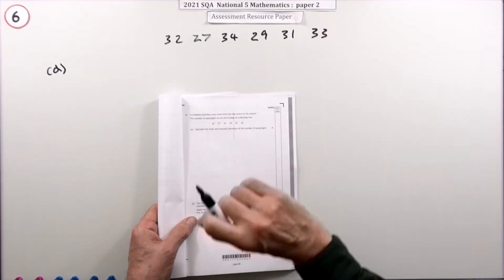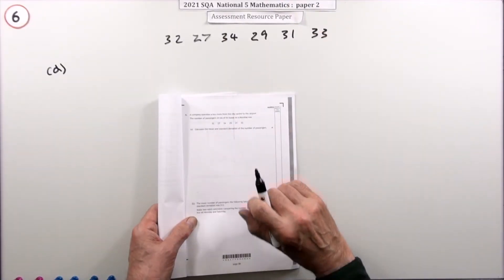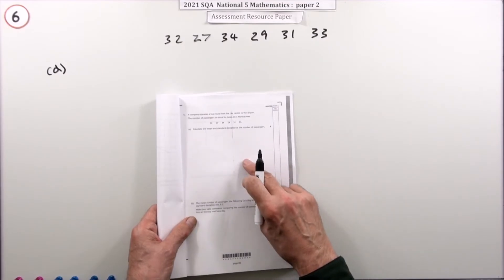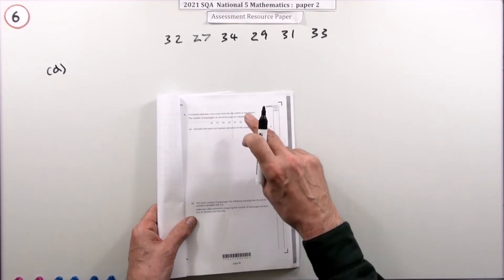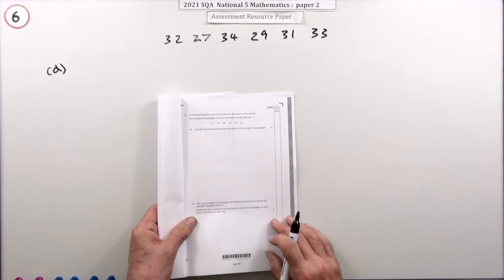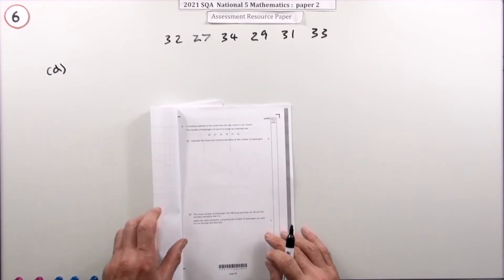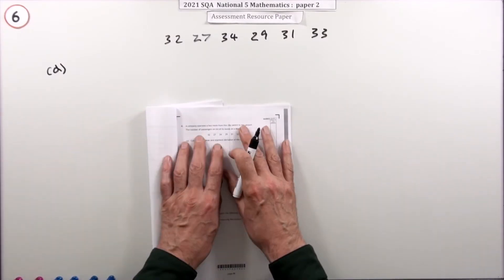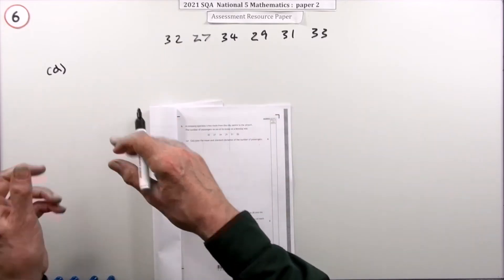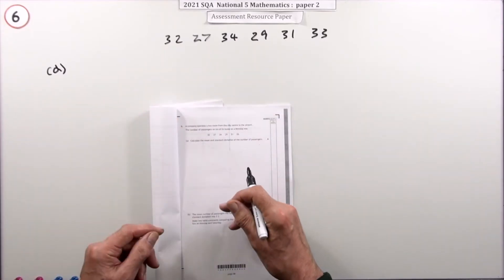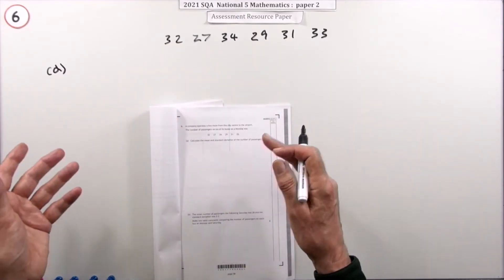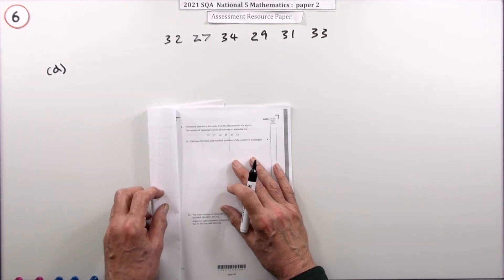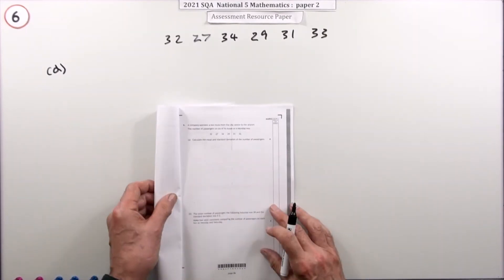Question 6 from Paper 2 of the 2021 National 5 resource paper - this is the statistics question involving mean and standard deviation. It appears in Paper 2 because that's the calculator paper, whereas the corresponding measures of average and spread - median and semi-interquartile range - would appear in Paper 1.